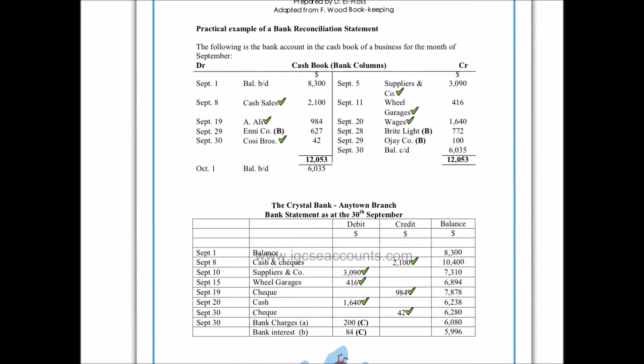As an accountant, we will have already constructed a cash book which tells us, according to the bank columns, exactly how much money we have in our bank account. In this example, according to our bank balance we should have £6,035 in our bank account. However, the problem arises when the bank sends their own statement, put together by their own accountants, and often what they think we have in our bank account is different. Our accountants reckon we have £6,035, but according to the bank statement their accountant thinks we only have £5,996 as a balance.